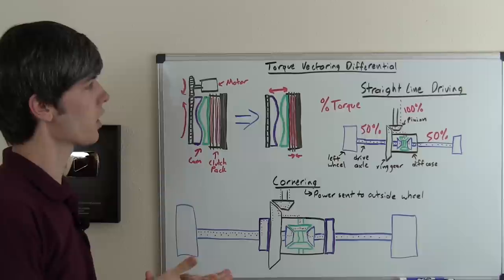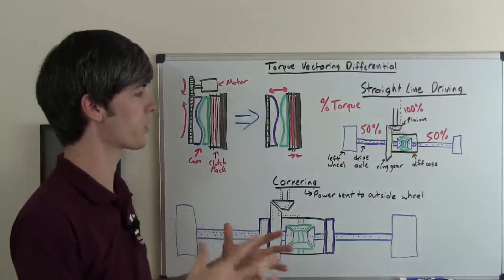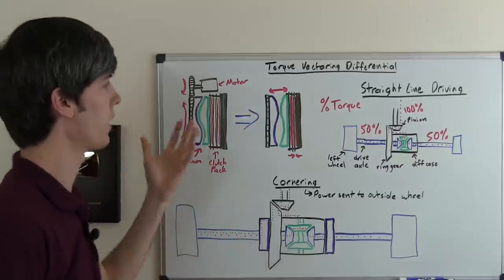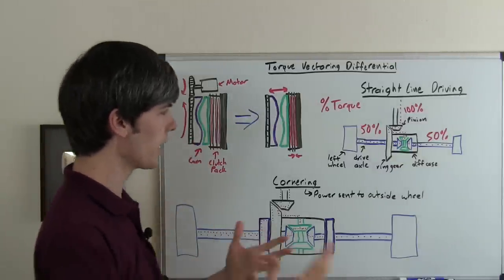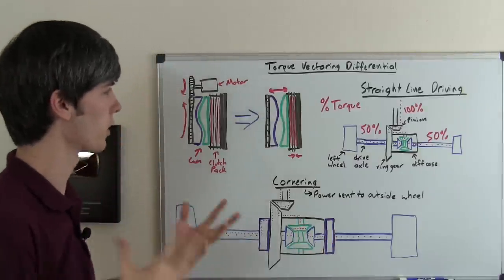So let's talk about the torque vectoring differential and how it differs how much torque is sent to each wheel using these clutch packs and this is kind of a simplified version to understand what's going on but nonetheless it will explain the concept.